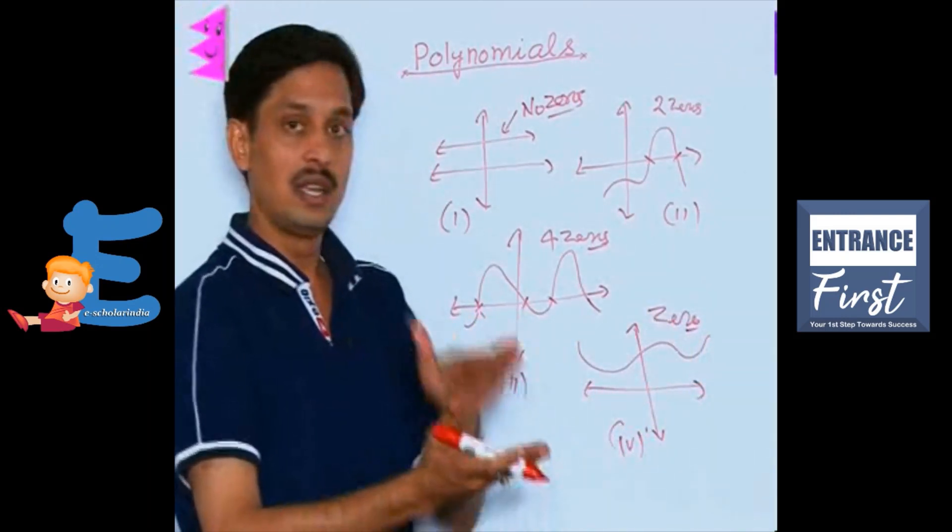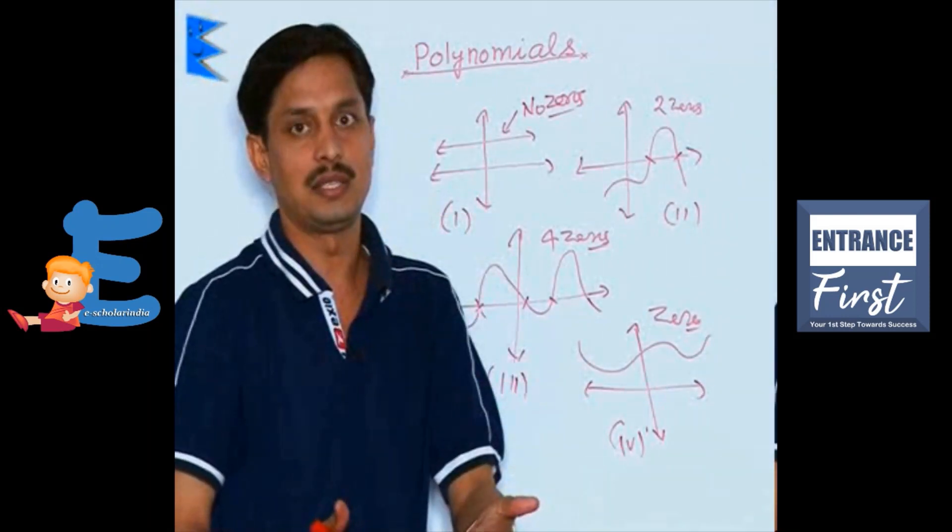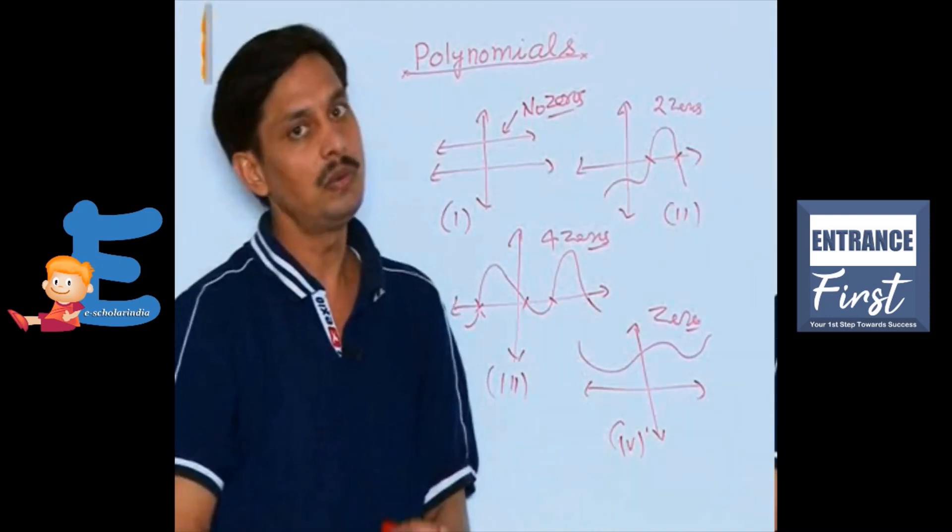We can say that as many points are intersected by the curve on x-axis, that polynomial has same number of zeros.